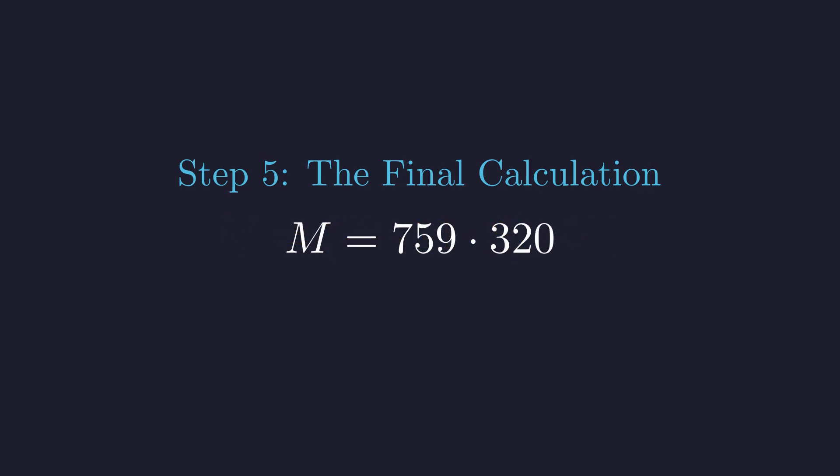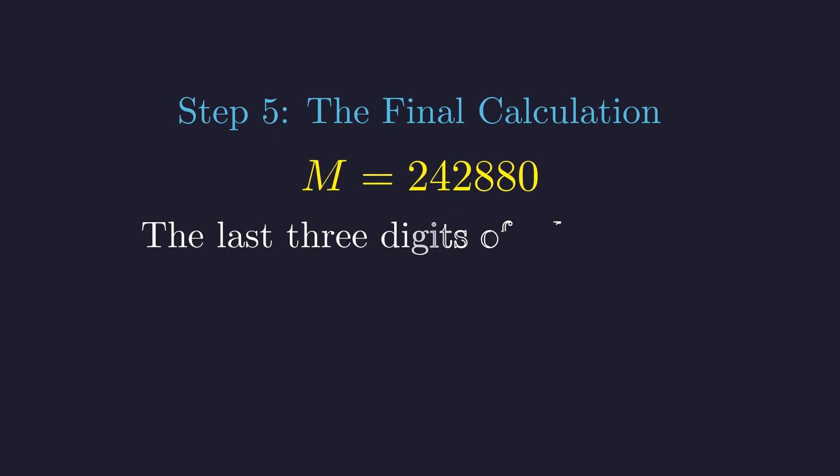Now we just need to multiply these two numbers. 759 times 320 equals 242,880. So M equals 242,880. Remember, we want the last three digits. Looking at our result, the last three digits are 880.